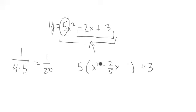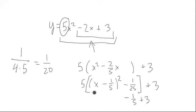And then we can write this as 5 times x minus 1/5 squared, and then we would have minus 1 over 25. We can multiply this 5 in and get minus 1/5, plus 3.